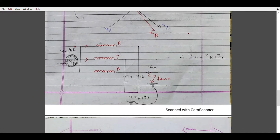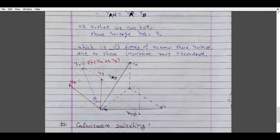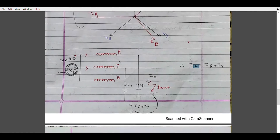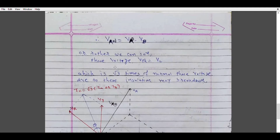To find Ic, which equals Ir + Iy, we find the vector sum of Ir and Iy. Doing so, the fault current in the faulted phase due to arcing ground has a magnitude of root 3 times the normal phase current. Also, the values of Ir and Iy each become root 3 times, so the value of Ic becomes 3 times the normal healthy current. Therefore in the case of arcing ground, the voltage becomes root 3 times and the current becomes 3 times.